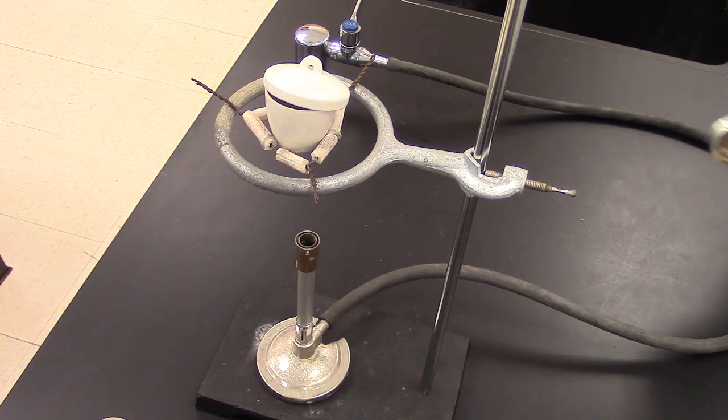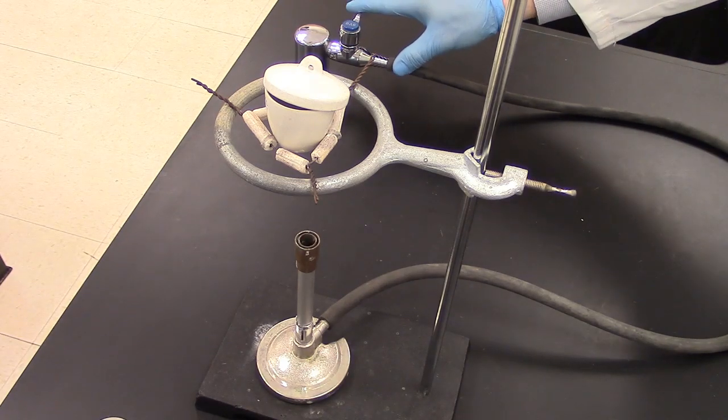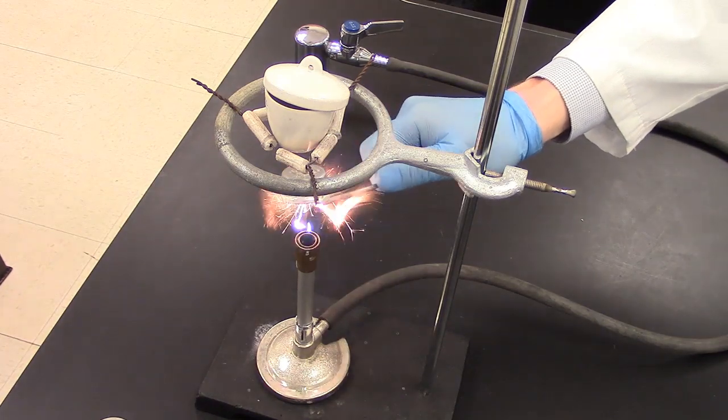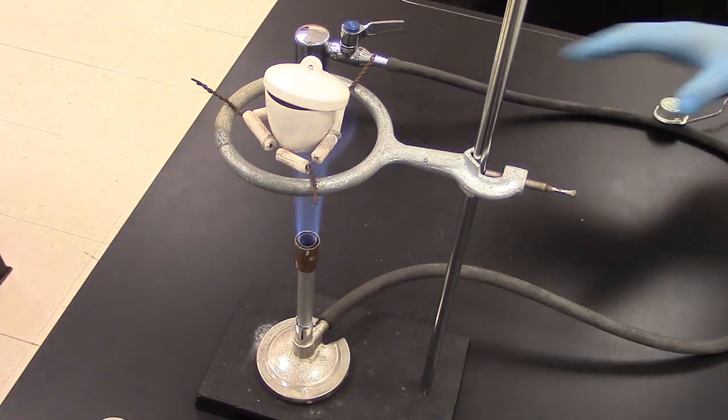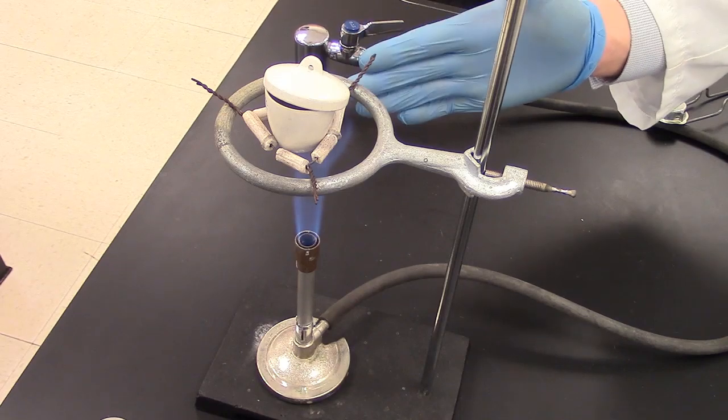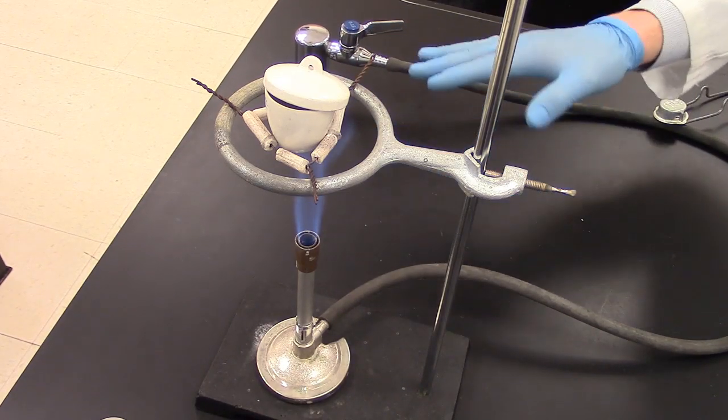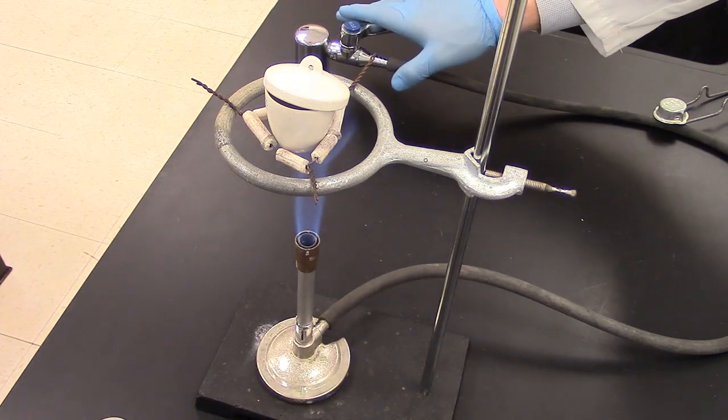So my next step is to go ahead and light the Bunsen burner. I'm going to turn the gas on at the valve and light it with the striker. Now you want your flame to be just touching the crucible here. If you notice your flame is not quite there, go ahead and turn it up with the gas valve.